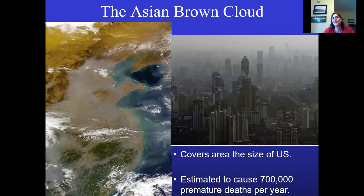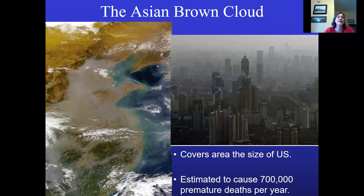This is a picture of pollution over Asia, but we have a lot of our own pollution issues here. It's estimated to cause 700,000 premature deaths per year. And as we saw in the last lecture, there are other worldwide statistics about what air pollution does.